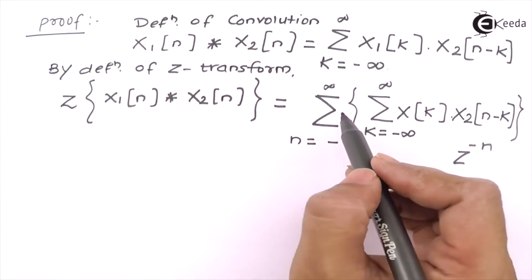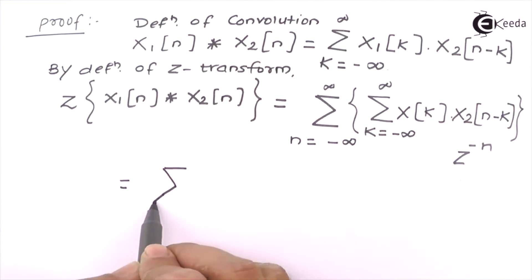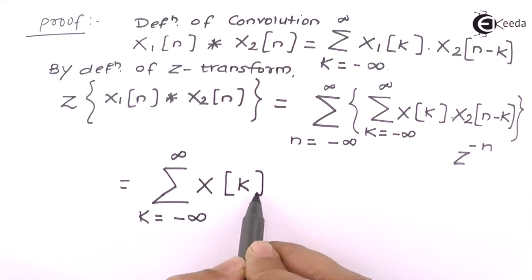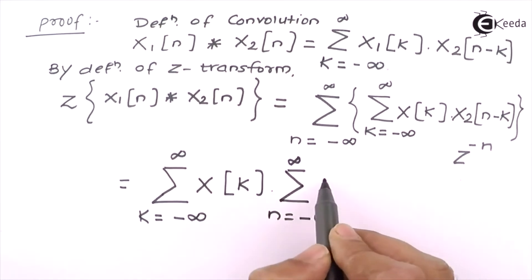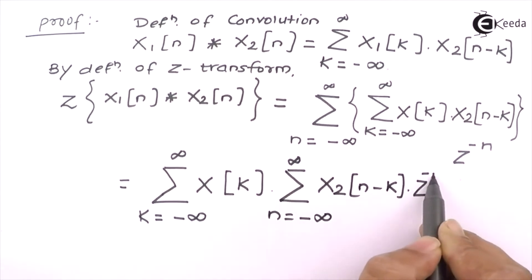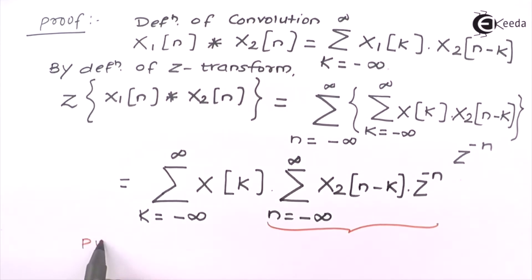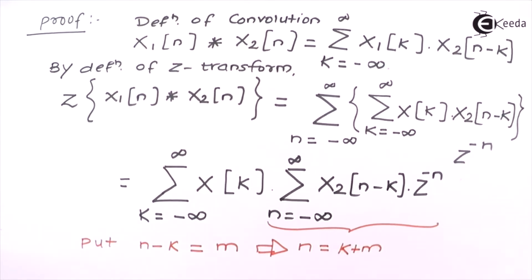Now we have to smartly select the summations. We will take the summation where k varies from minus infinity to infinity of X1[k] separately, with respect to the summation where N goes from minus infinity to infinity of X2[N-k] times Z raised to minus N. We will change the index: if we put N minus k equal to M, this implies N is nothing but k plus M.